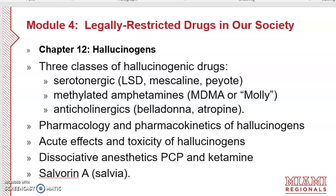There are also anticholinergic hallucinogens like belladonna and atropine. We'll talk about the pharmacology and pharmacokinetics of hallucinogens, their acute effects and toxicity, and other types including DMT, the dissociative anesthetics PCP (angel dust) and ketamine (special K), and the book also addresses salvinorin A or salvia. That is our quick overview of what we're going to cover in Module 4 — if you have any questions, please email me.